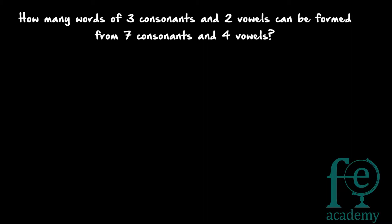So what will be your answer? You can select 3 consonants from a total of 7 consonants — it can be done by combination 7C3. From 4 vowels you have to select 2 vowels, so it can be done in 4C2 ways. Then you can rearrange these 5 letters — 3 consonants and 2 vowels. So these 5 letters can be arranged in 5 factorial ways. So you will be getting 7C3 into 4C2 into 5 factorial. So these many words can be formed.